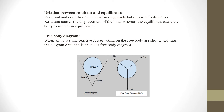We will see the free body diagram. When all active and reactive forces acting on a free body are shown, the diagram obtained is called a free body diagram. So, all forces are shown and the diagram we obtain is called the free body diagram.